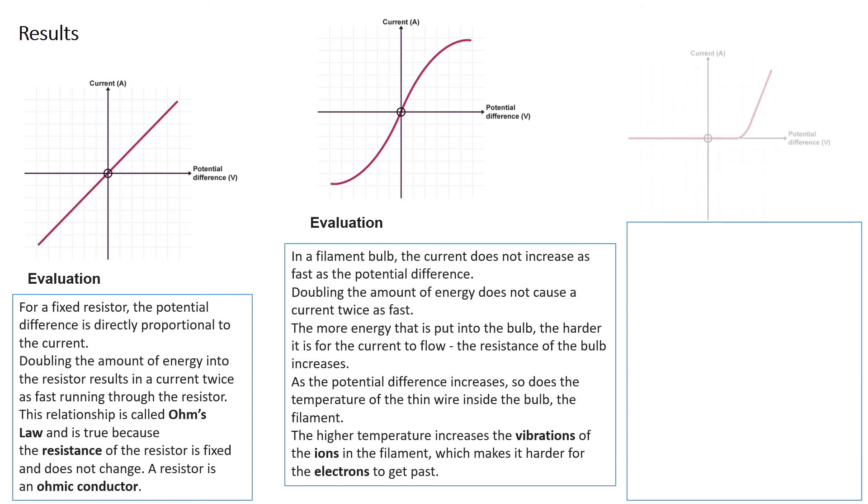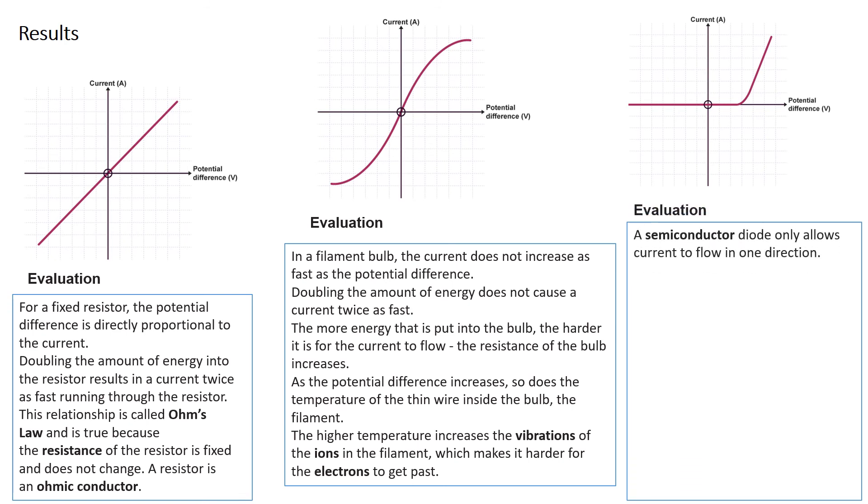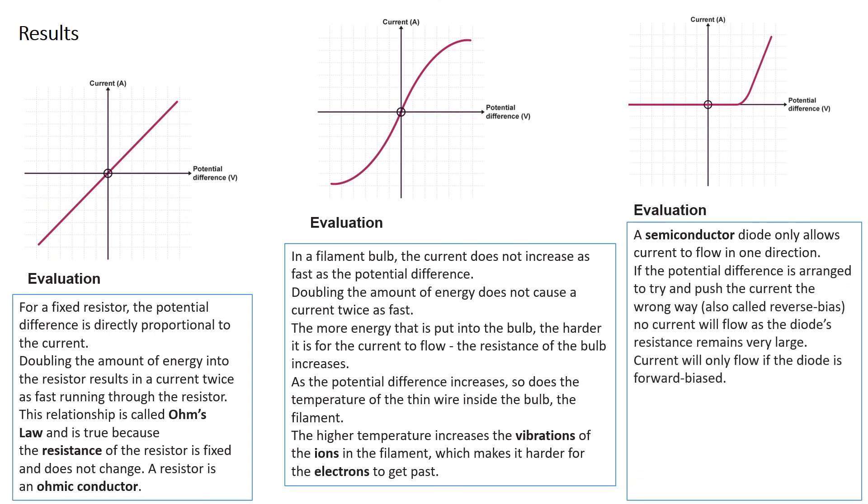Then we have another riveting graph. What I want to draw your attention to on this graph is that the line actually starts over here to the left, goes along the origin, then goes through the origin and then curves. If we were asked to reproduce this in an exam, you would need to make sure you can show that it starts over here on the left. This is a semiconductor diode, and it allows the current only to flow in one direction. So when we reverse the power pack, we have nothing - we don't get anything. You do need to be able to explain this. What may they ask us? They might ask you to explain the pattern for each component.